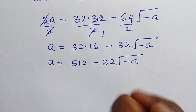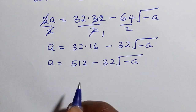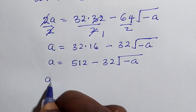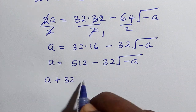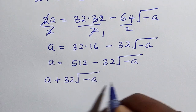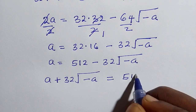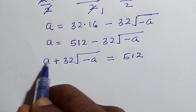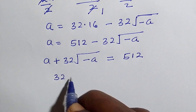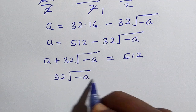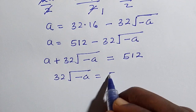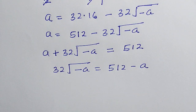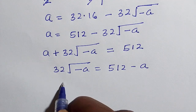To get rid of this radical we rearrange: a plus 32 square root of minus a equals 512 minus a. And to isolate the square root term we need to square both sides again.